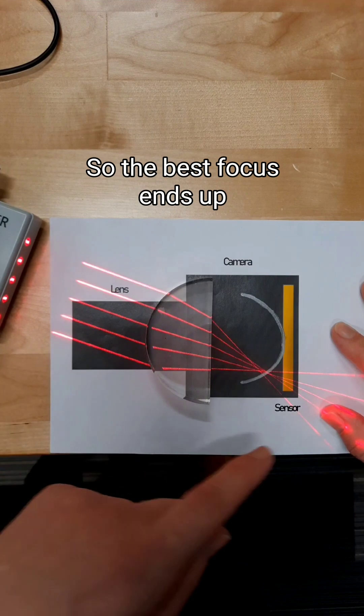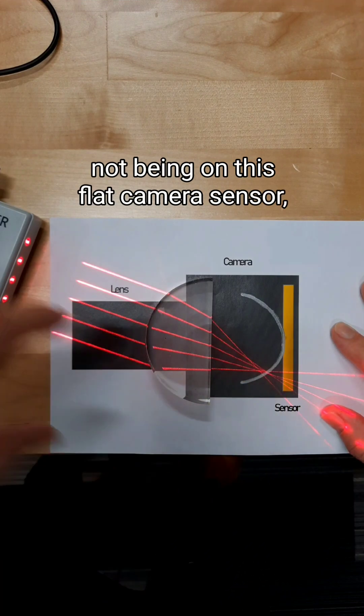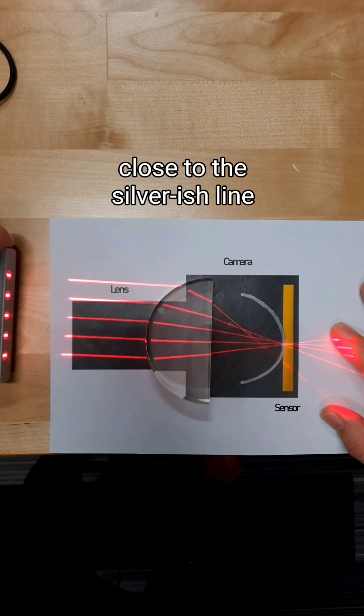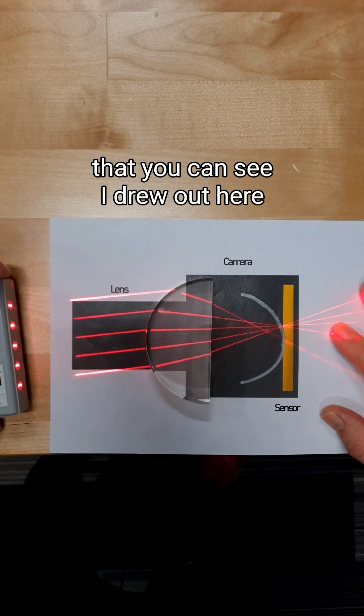So the best focus ends up not being on this flat camera sensor, but on this curve close to the silver-ish line that you can see I drew out here.